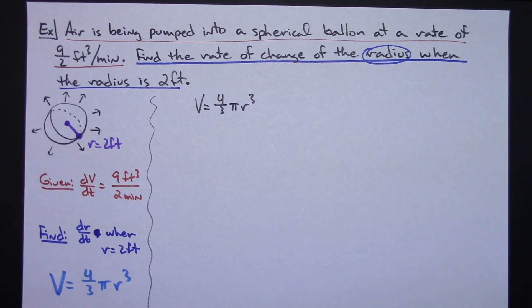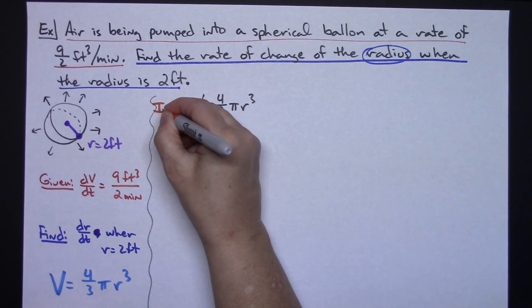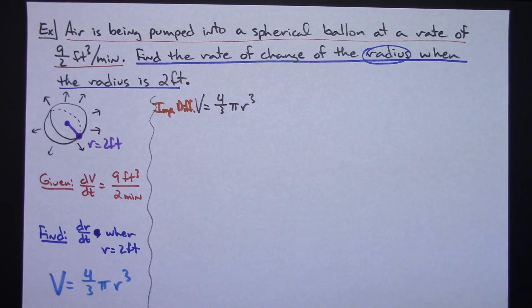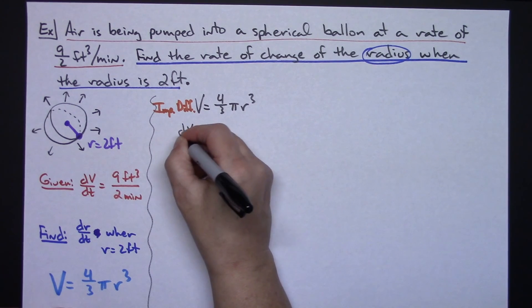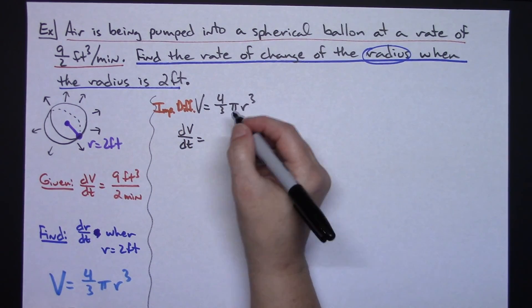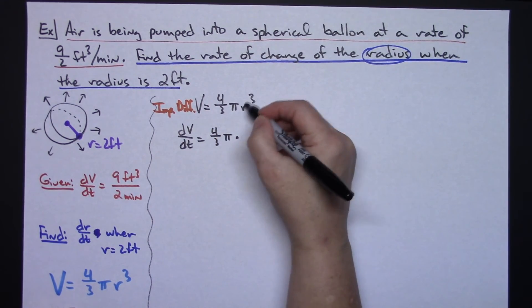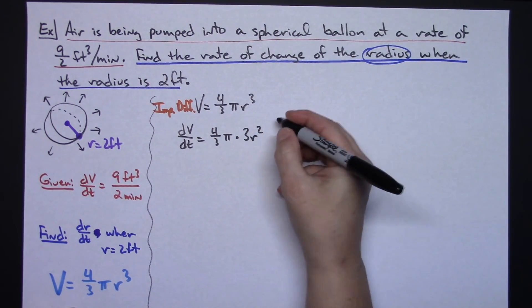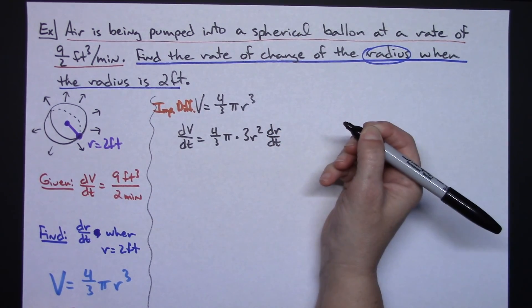And then the first thing I'm going to do here is I want to implicitly differentiate this. So let's make a little note that that's what we're doing right here. Implicitly differentiating this with respect to time. So that V is going to become a dV/dt equals, the 4/3 π is just going to stay there for right now because those are just constants out in front. Now let's focus on this r³. That'd be 3r². And then with respect to time, I have to remember that chain rule: dr/dt.